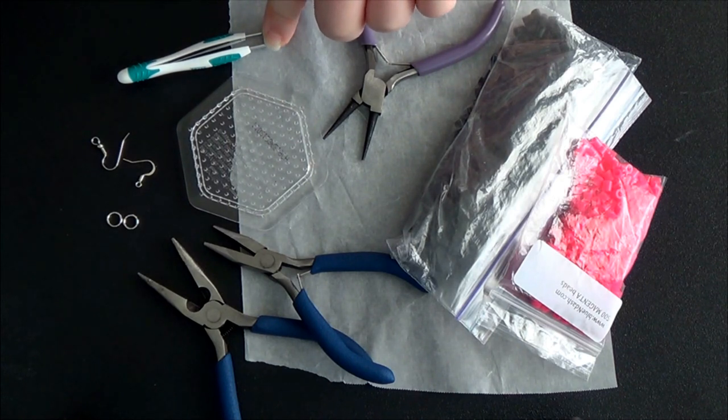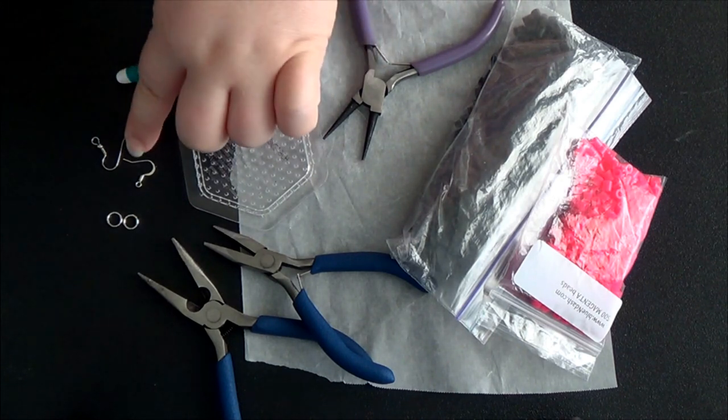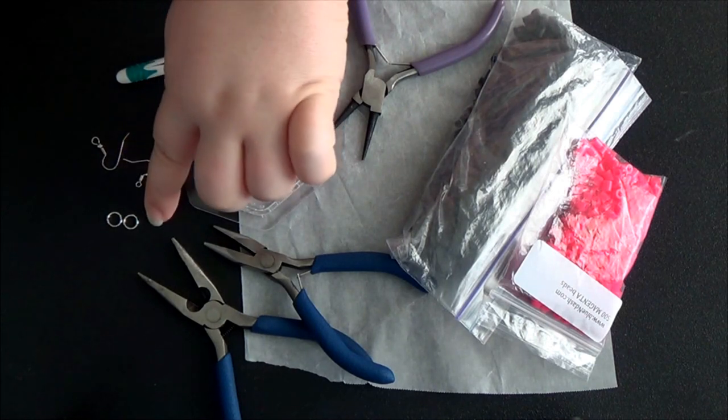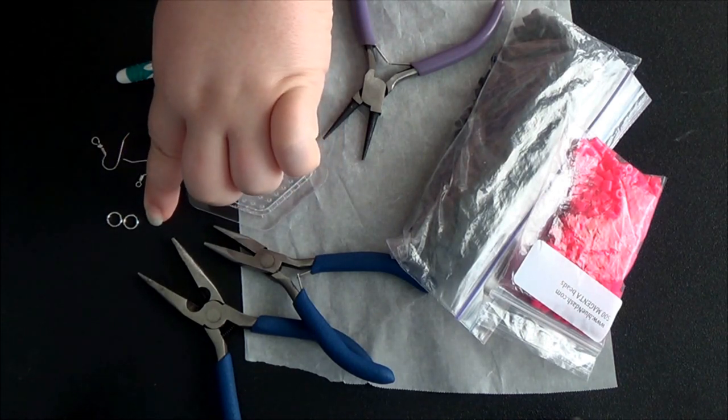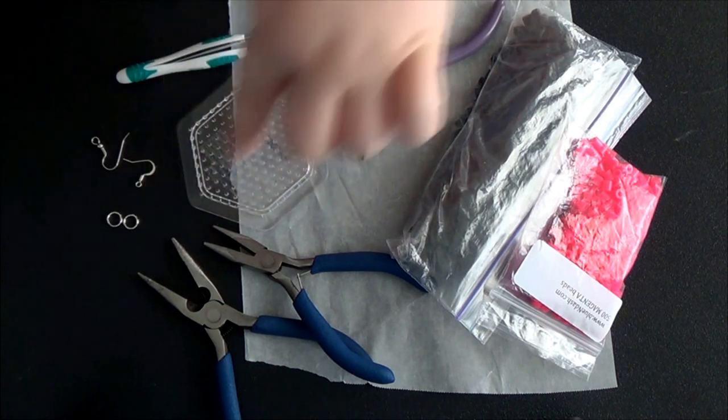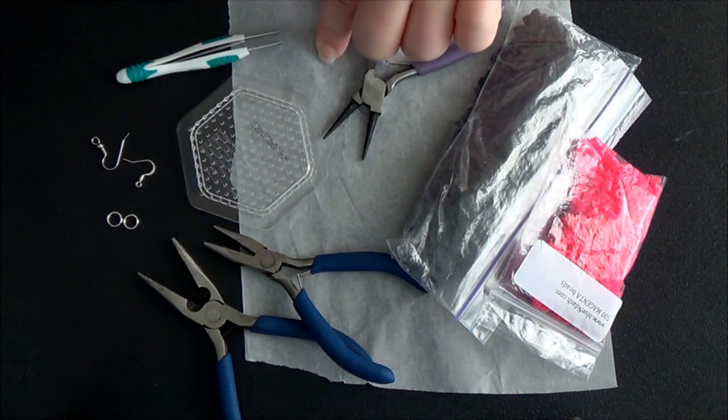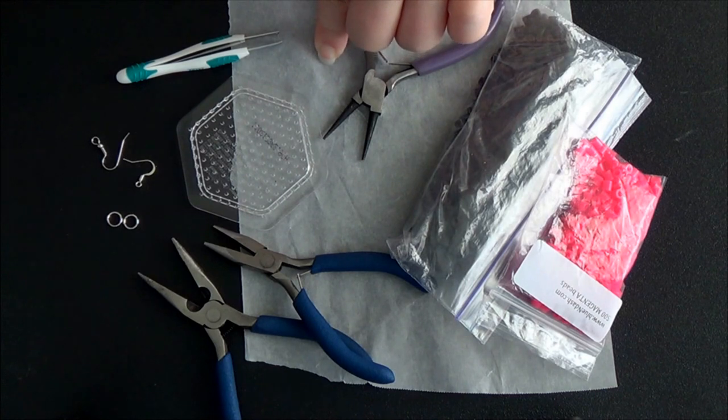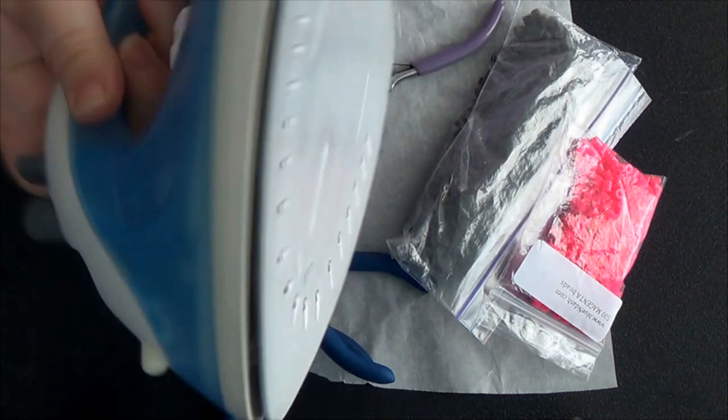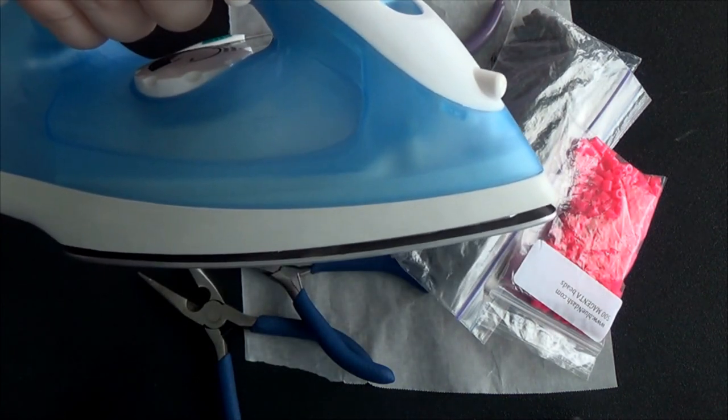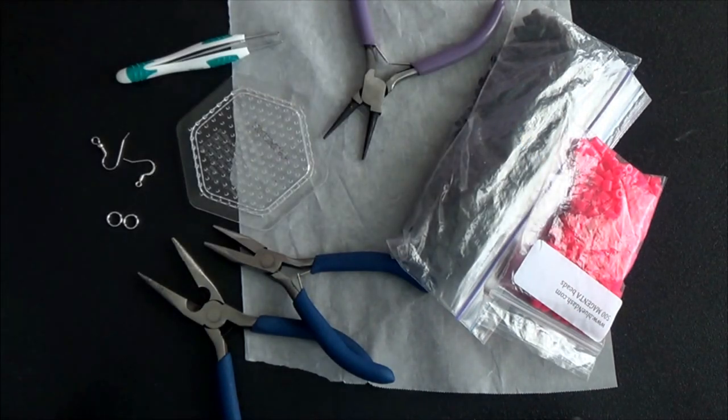You're also going to need two earring hooks, two large jump rings, and parchment paper to iron down your project. Last but not least, you need an iron - make sure it's set to the cotton setting while you're creating your project.